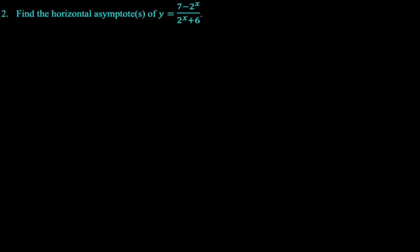Find the horizontal asymptote of y equals 7 minus 2 to the x over 2 to the x plus 6. So we have to go to infinity and negative infinity. This is not a rational function. It's not a polynomial divided by a polynomial, so you got to consider both cases.